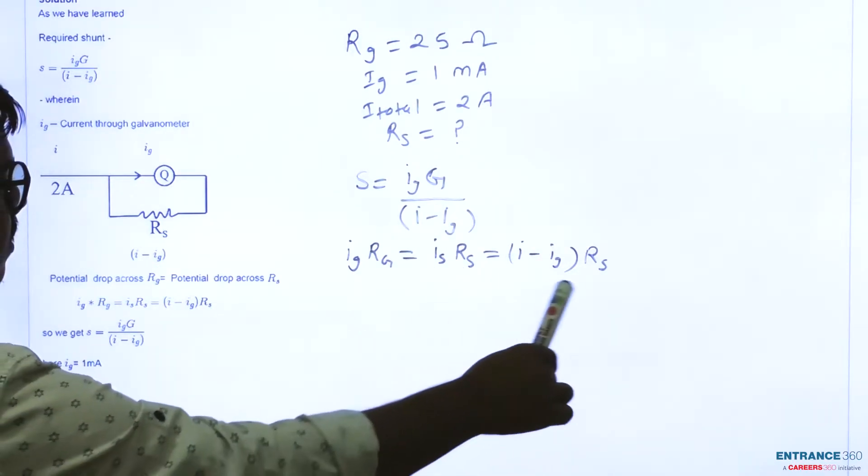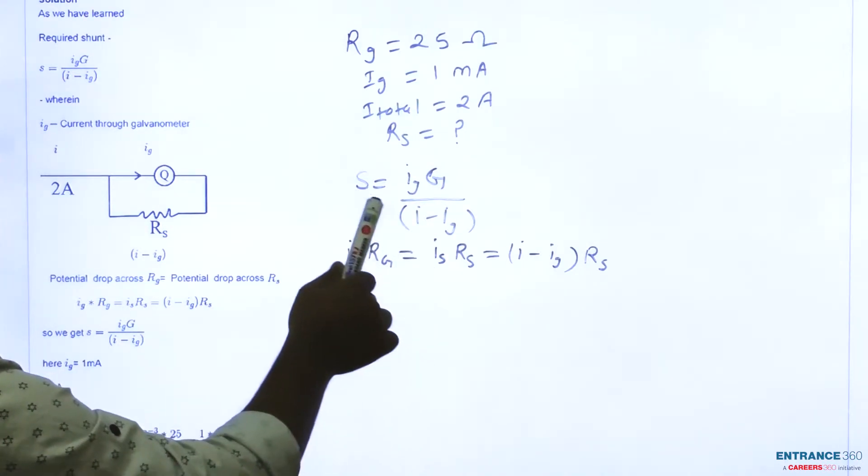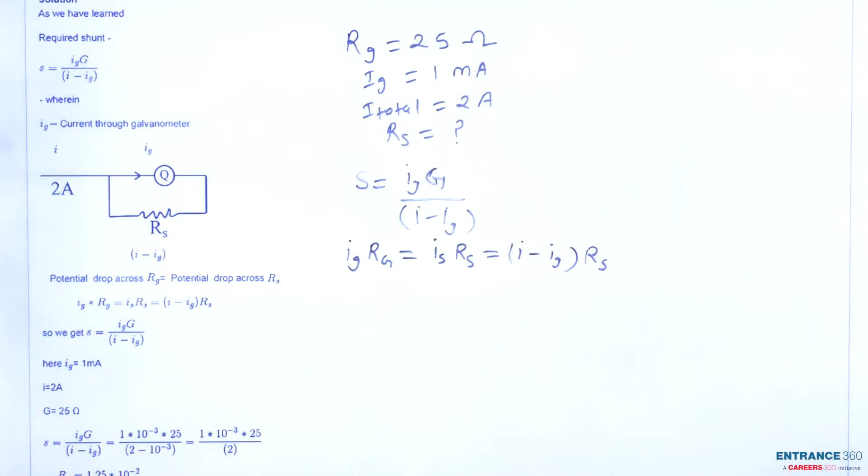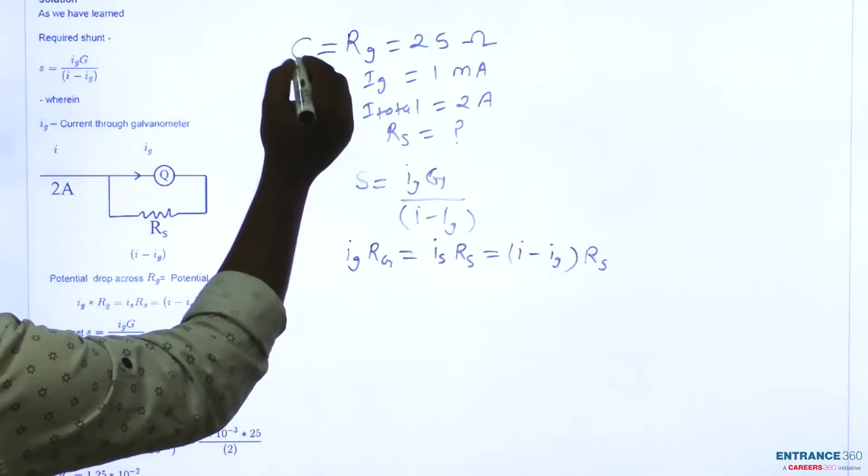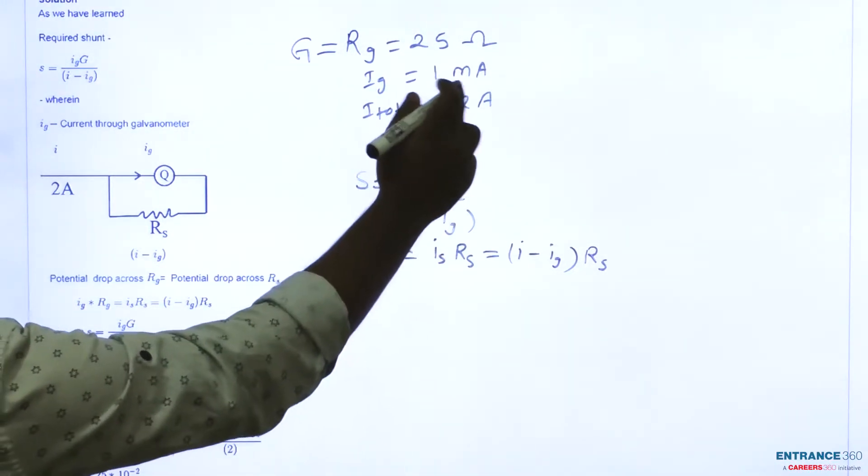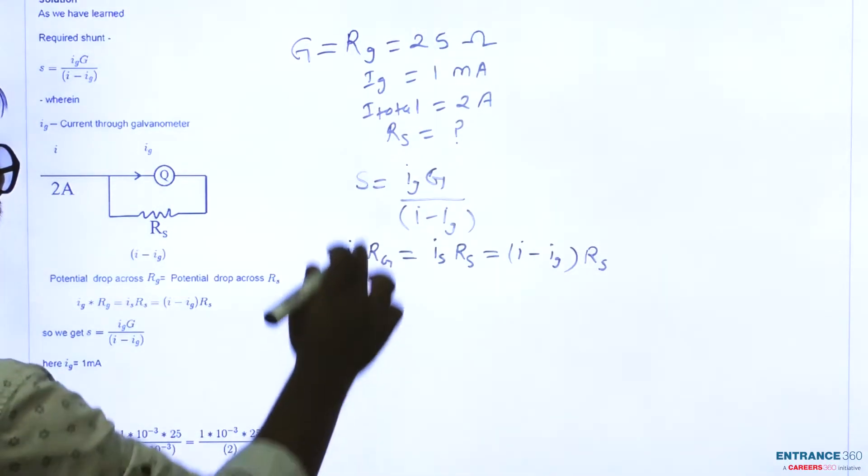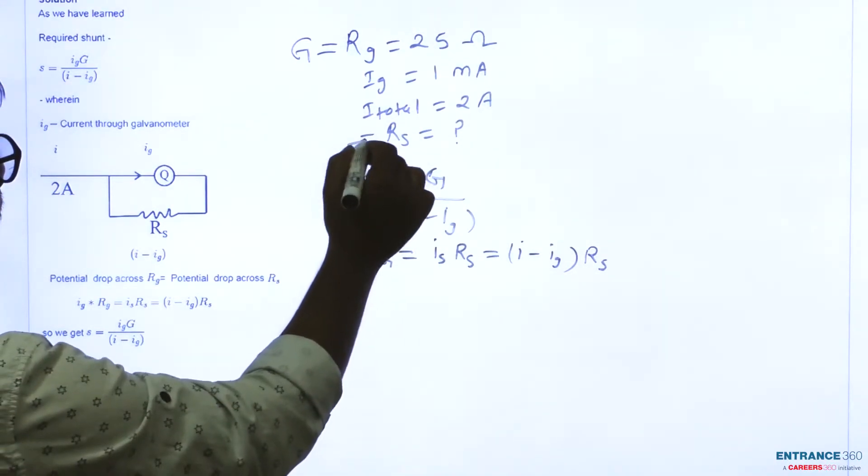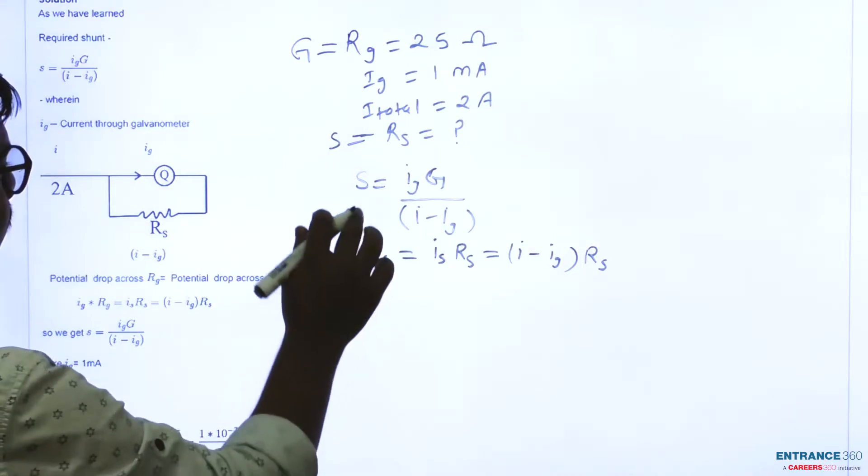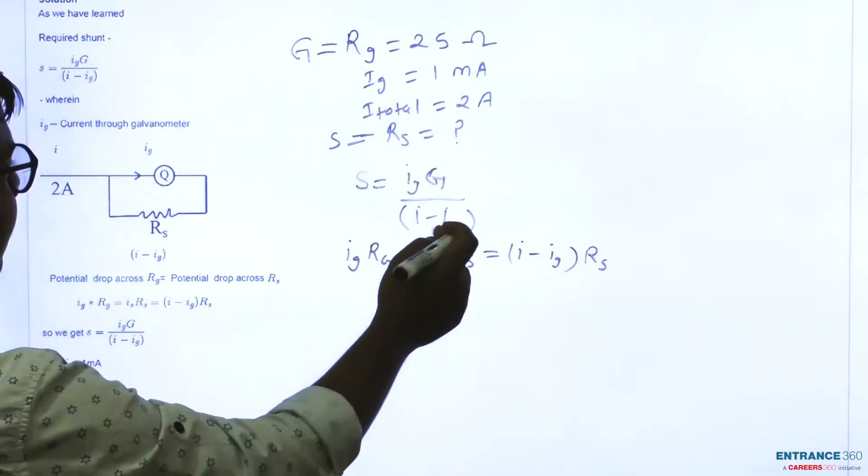So from the question we know that G or Rg is equal to 25 Ohm, and Ig is equal to 1 milliampere, I total is 2 ampere. Then we want to find out value of Rs or S. So we know the formula, we know the given quantity, let's put this given quantity in this formula.